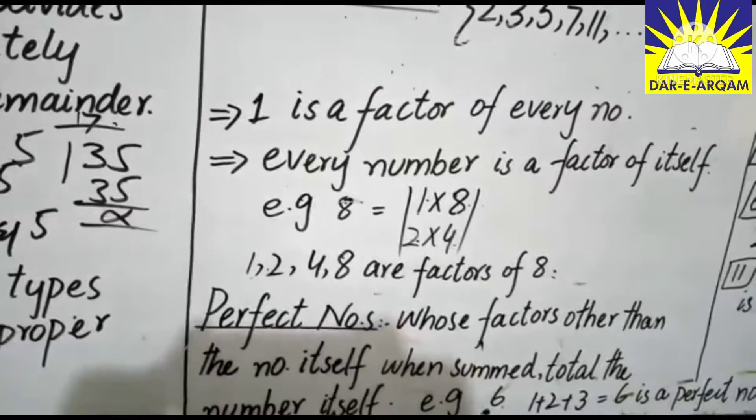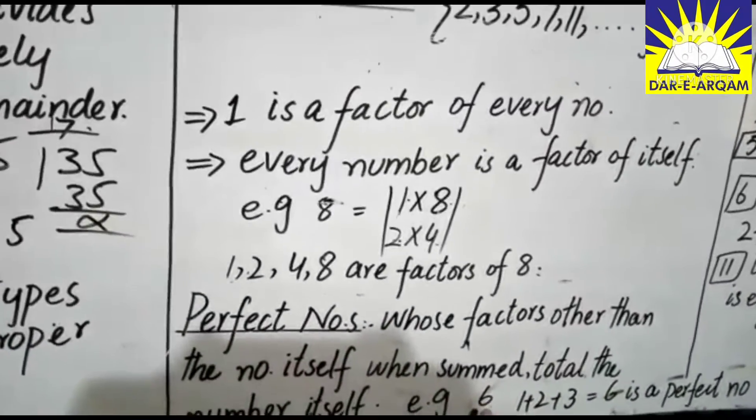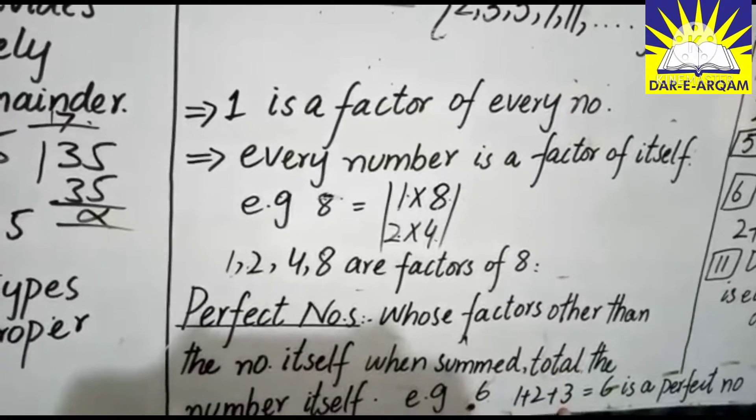For example, 6 is a factor of itself. Its factors are 1, 2 and 3.